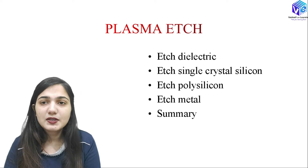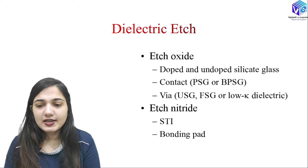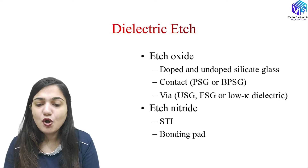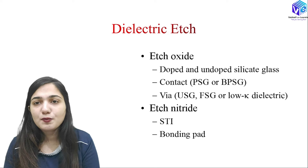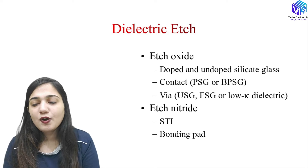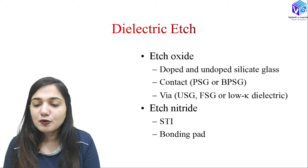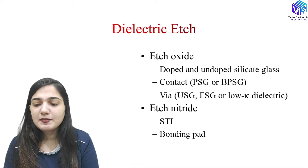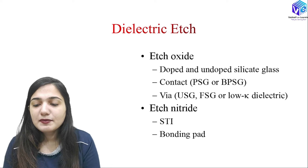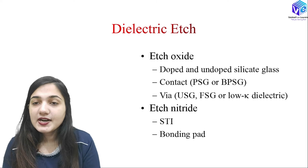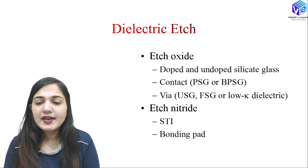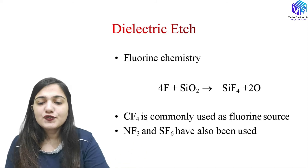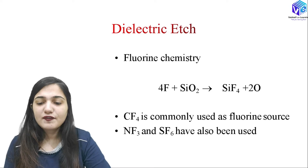Coming to the dielectric etch: we want to etch out oxide or nitride. For etching oxide, we can have doped and undoped silicate glass, such as PSG (phosphosilicate glass) or BPSG (borophosphosilicate glass). For doped silicate glass we use contact etch. The VIA etch can be used for the USG layer, FSG, or low-k dielectric materials. For etching nitride, we want to make shallow trench isolation or bonding pads, so we use nitride etch.